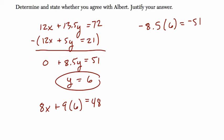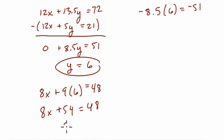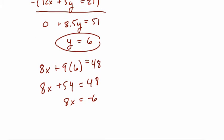So that means 8x plus 54 equals 48. Subtract 54 from both sides, and 8x is negative 6. So that means x, if you divide both sides by 8, is negative 6 eighths or negative 3 fourths.